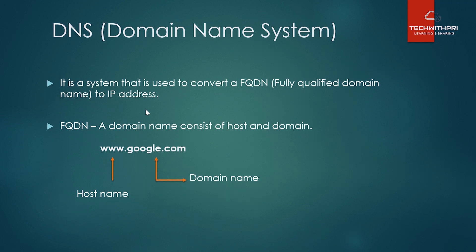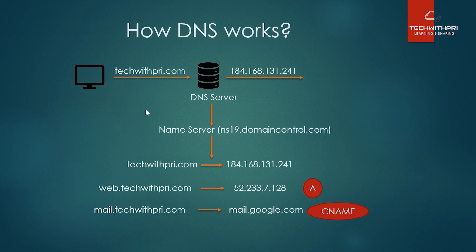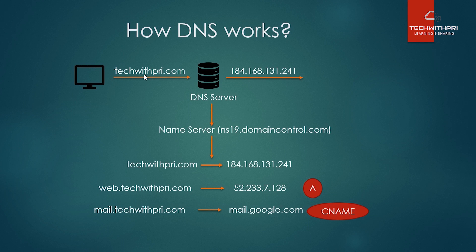Something needs to be there to convert your domain name — like google.com — to an IP address like 212.172.34.56. That is the job of DNS. Here in the diagram, my domain is techwithpre.com, which I purchased from GoDaddy. Whenever you purchase a domain from GoDaddy, Hostgear, Bluehost, or similar sites, you get a DNS management page where you can see all the records.